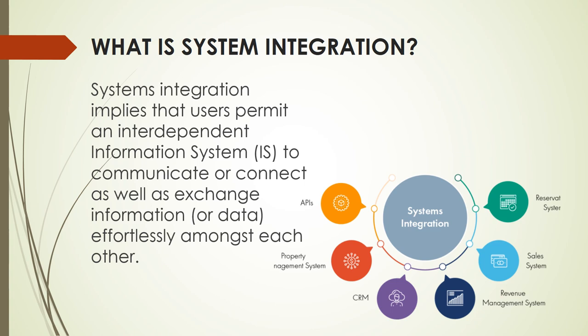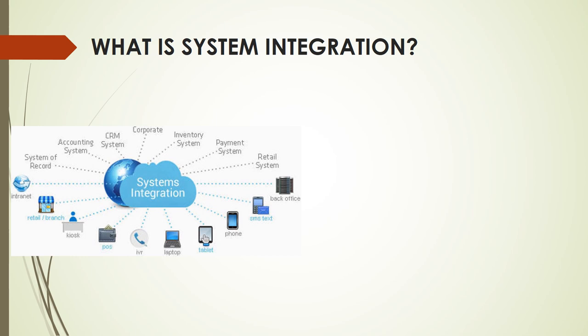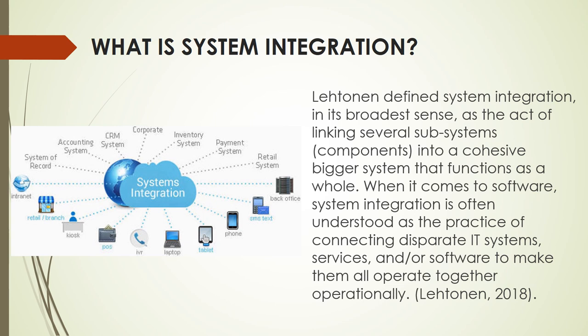As you can see in the picture, there are different types of systems like Customer Relationship Management, Revenue Management Systems, Sales Systems, and Reservation Systems, all interdependent to one another using System Integration — they are connected and integrated to one another. Lettonen defines System Integration in its broadest sense as the act of linking several subsystems, or components, into a cohesive, bigger system.